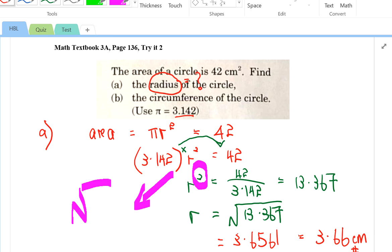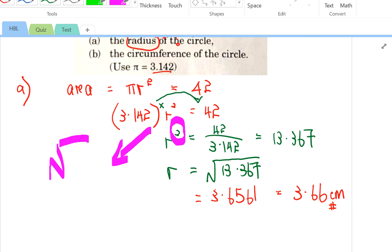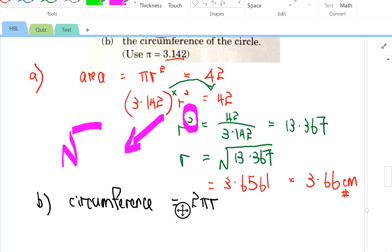Next, part B wants us to find the circumference of the circle. Let me write down the formula for circumference of a circle. If you recall, circumference of a circle, 2 pi R. I have already found the radius in part A. So I'm going to tackle this question now. Pi is given in the question. Remember, put it in bracket. The radius is found in your previous answer. I will not use the 3.66 answer because that is an estimated answer. I'll use a more accurate answer, which is 3.6561.